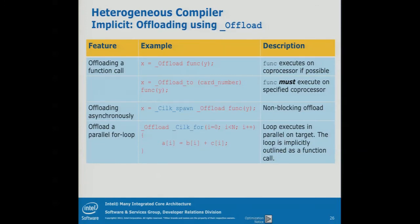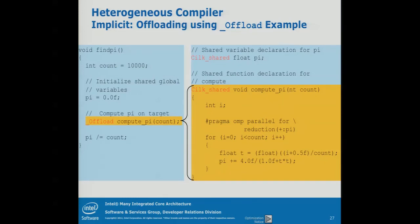This is how it works: you can offload a function to a certain card number just as with the pragma model. And if you want to do an async offload — which is why it blends well with C++ — you just say 'new C++ offload function', and a new C++ object is created that takes care of the offloading. When you need the result, you make another call and wait for the offload function. Here I'm offloading 'compute_pi' to the coprocessor and using OpenMP internally to parallelize it.